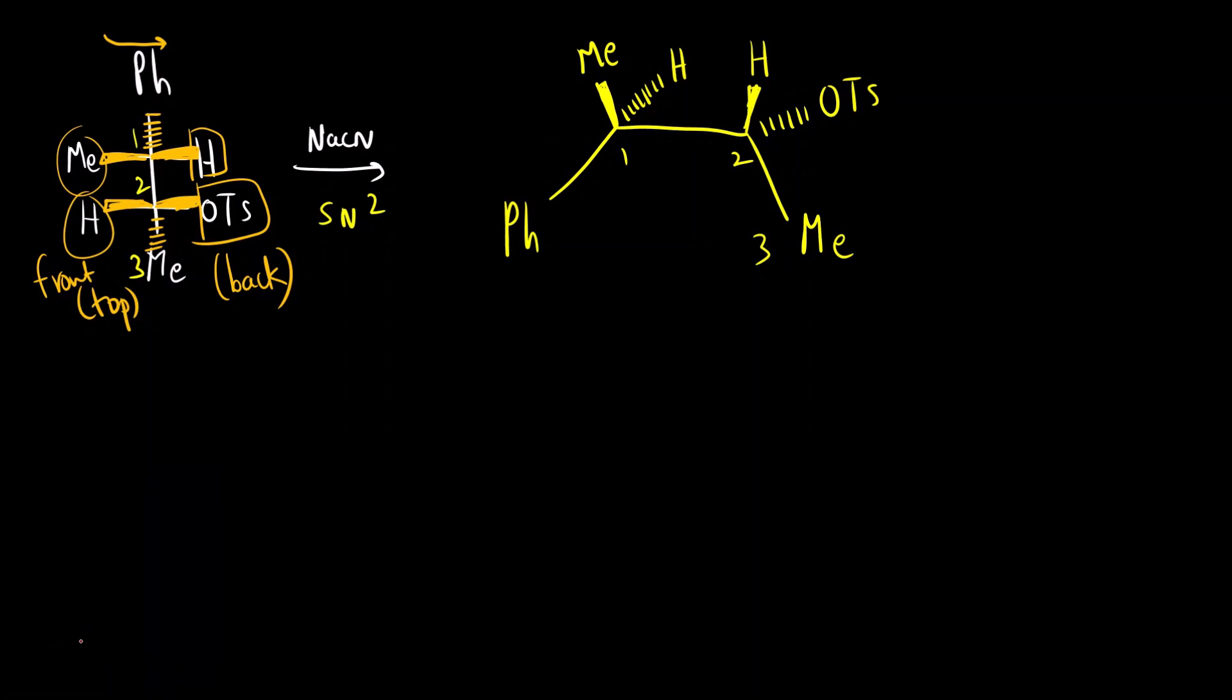Now how will CN attack? We have seen it is going to be SN2 mechanism. CN minus will attack from the opposite side of the leaving group. The leaving group leaves from the back and CN minus will attack from the top. The product that we will get is Ph, this remains as it is, Me on the top, hydrogen below the plane, and here CN will be above the plane and hydrogen will go below the plane.